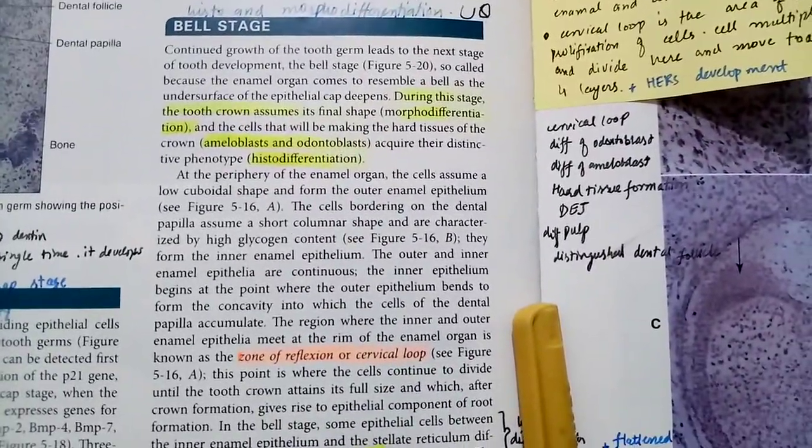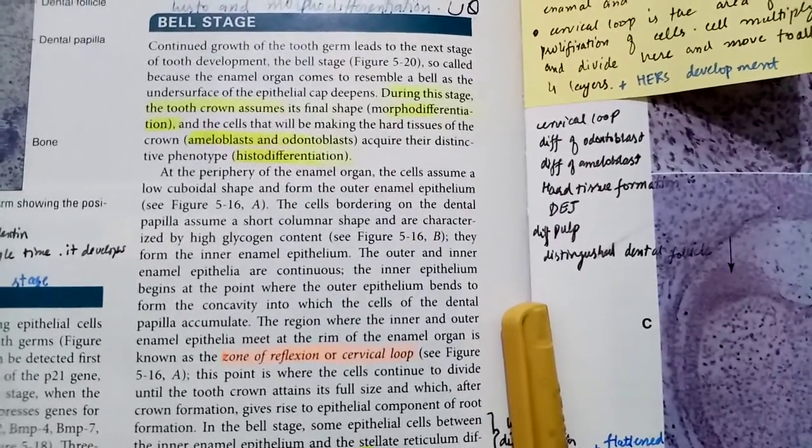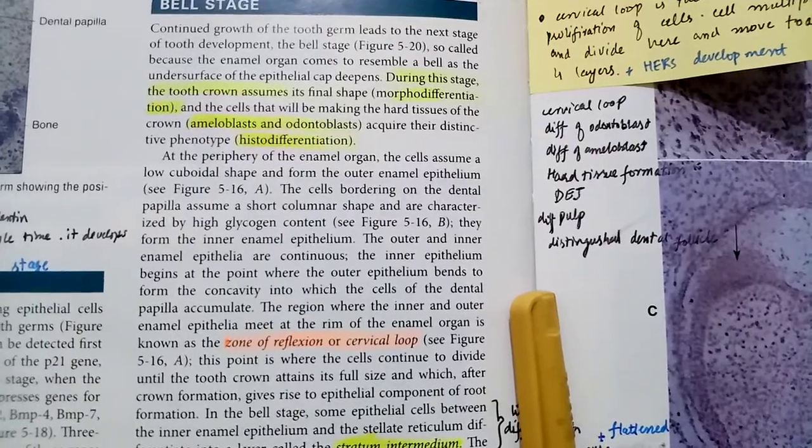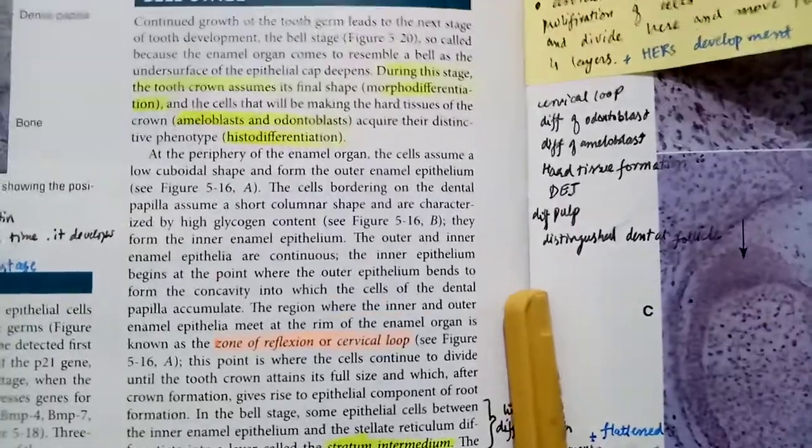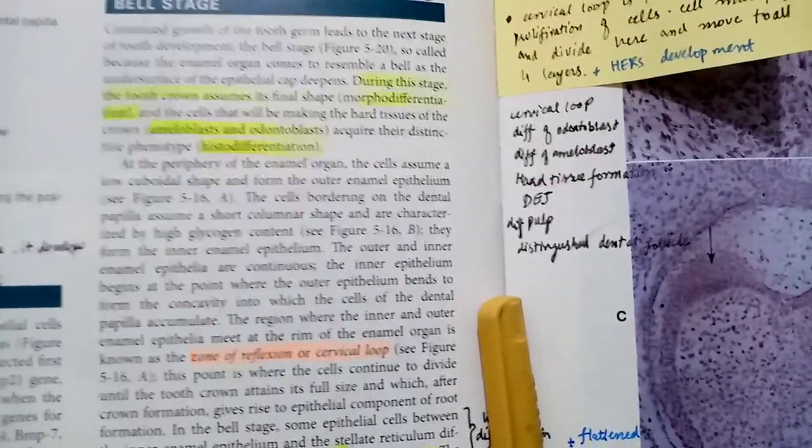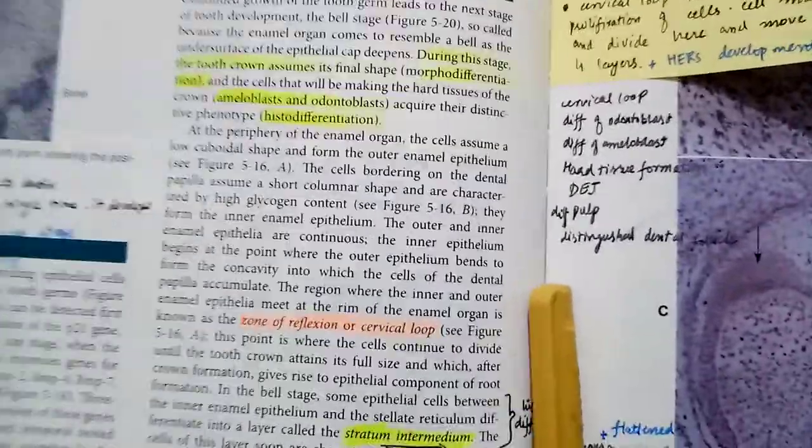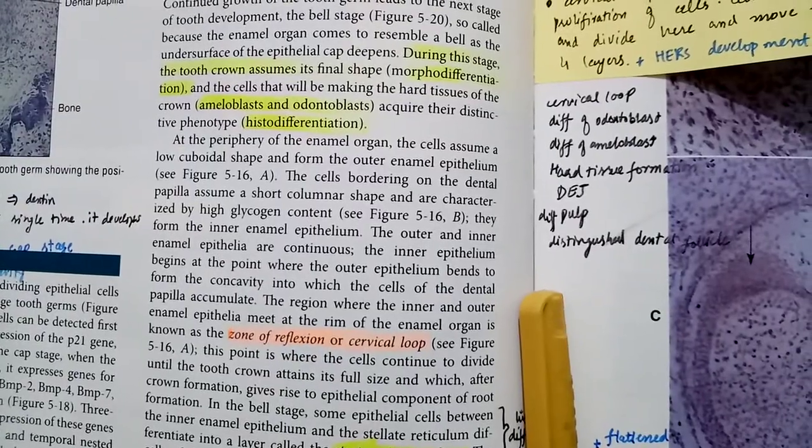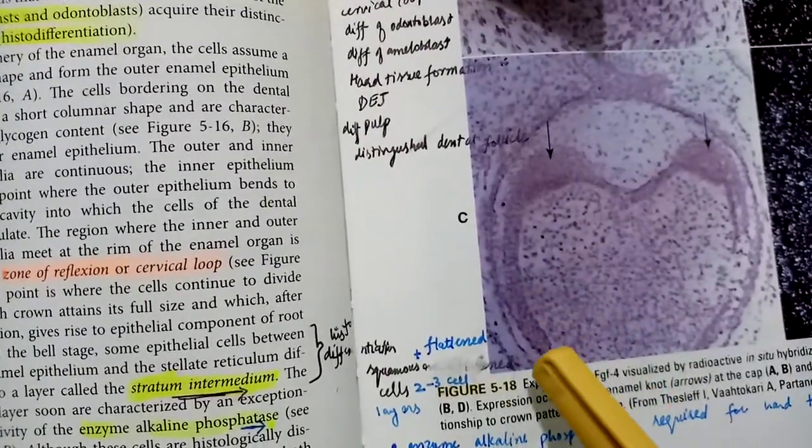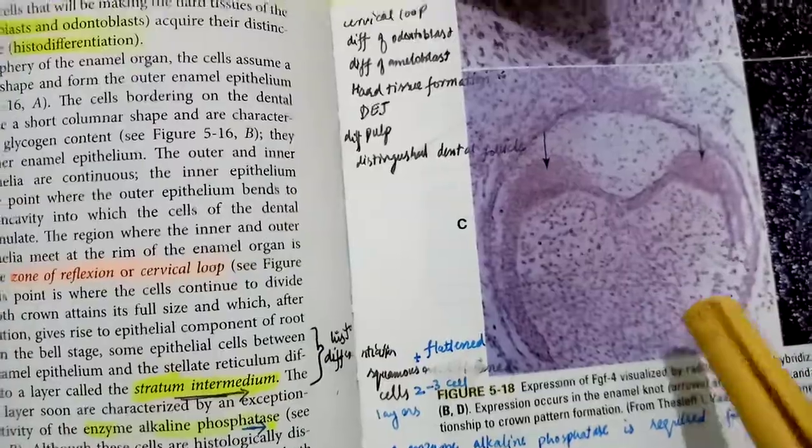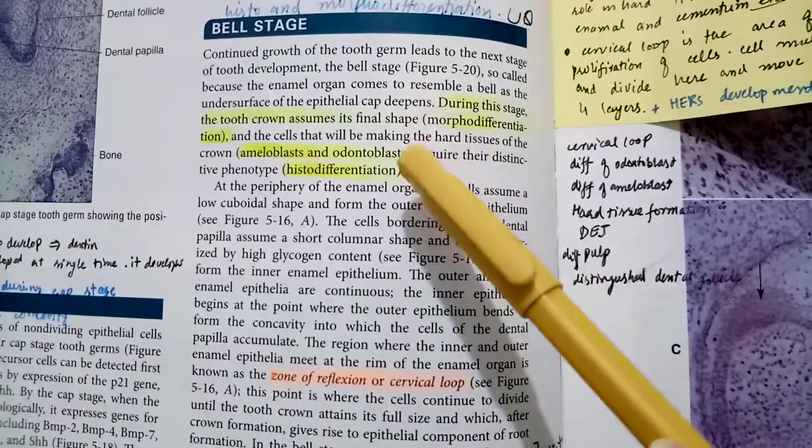Today's topic is bell stage. Continued growth of the tooth germ leads to the next stage of development, the bell stage, so called because the enamel organ resembles a bell as the undersurface of the epithelial cap deepens. During this stage, the tooth crown assumes its final shape. It is called the bell stage because the undersurface of the epithelial cap is more deep and it resembles a bell. If you see here in this figure, they have shown a bell stage of the tooth development where the enamel organ resembles more like a bell. In this stage the crown assumes its final shape.